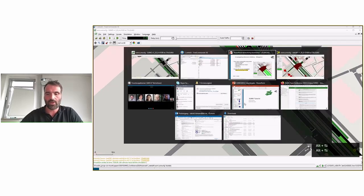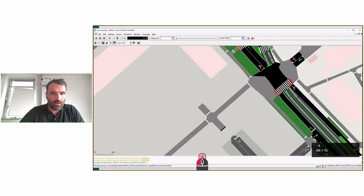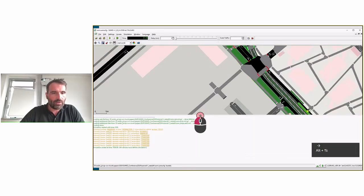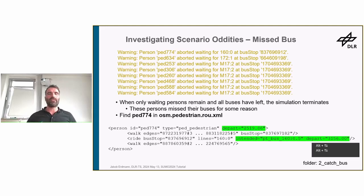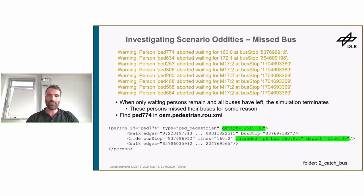Moving on to more oddities. At the end of the scenario, there are lots of warnings about pedestrians that missed their bus — they aborted waiting at a bus stop at the end of the scenario. This abortion is a convenience feature: the simulation noticed no bus will come anymore and there are only waiting persons, so it makes sense to terminate automatically. But of course there is then a warning. Now let's find out why these persons missed their bus.